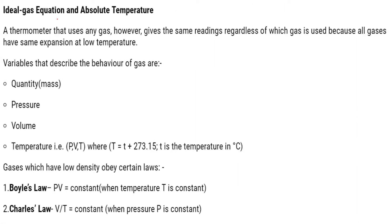A thermometer that uses any gas gives the same reading regardless of which gas is used, because all gases have the same expansion at low temperature. The gas behavior is described by the quantities pressure, volume, and temperature (PVT). The absolute temperature T is the centigrade temperature plus 273.15.